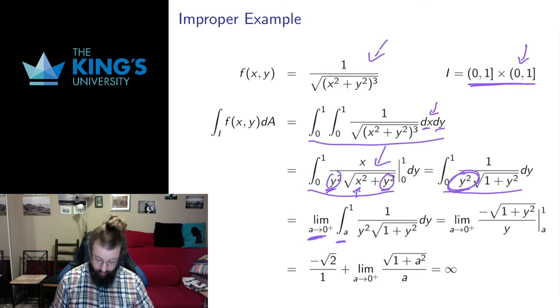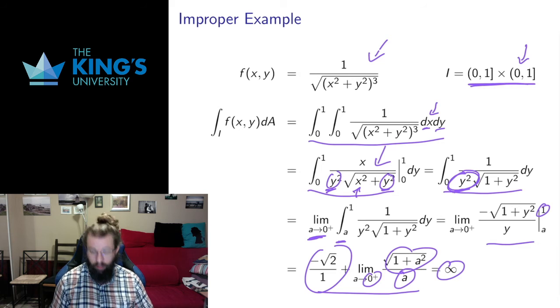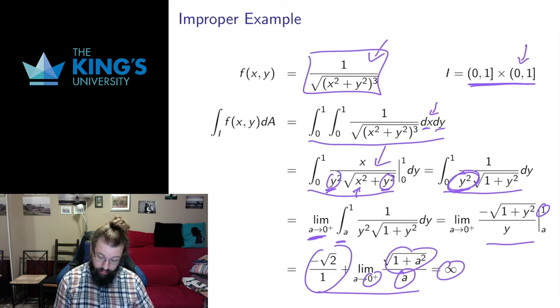I take the limit. This is the antiderivative that I get. I evaluate it on the limit. And this part is just fine. That's the evaluation at 1. And the evaluation at a as a goes to 0 positive. This is going to be 1. It's going to be divided by a very small positive number. This is going to diverge to infinity. So the volume under this particular function over this interval as we approach this corner where it shoots up to infinity is in fact infinite.